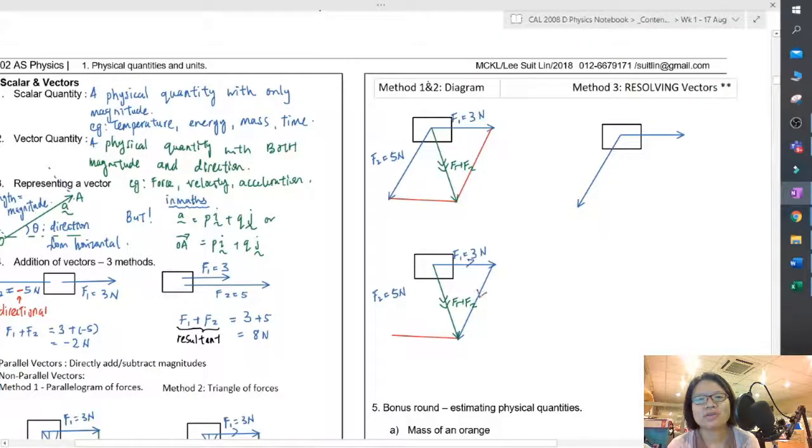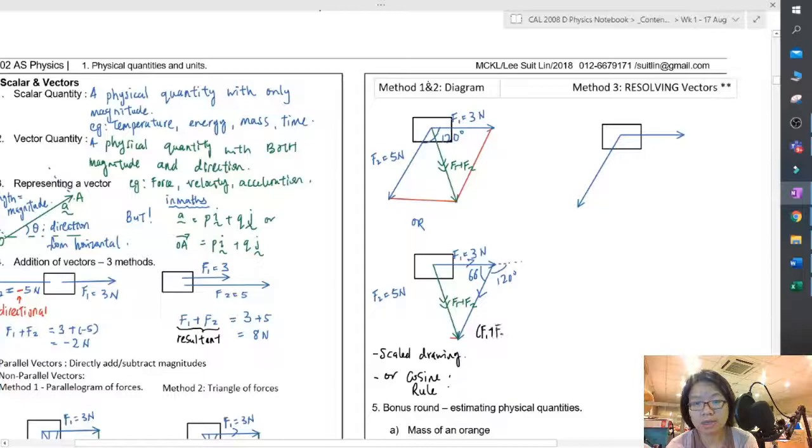You can use this parallelogram and then try to measure using a ruler. Or you can draw a triangle, the diagram method. Move the 5 newton here and slightly adjust the angle. You can see this triangle. And then you're like, miss, but that one is 120. So this one is 60. I don't know what to do. Well, then you draw a scale diagram. Indicate the scale that you use. Show the working carefully. I will show this in class.